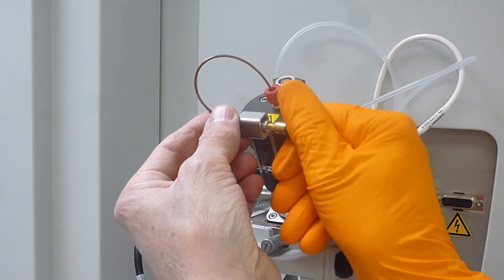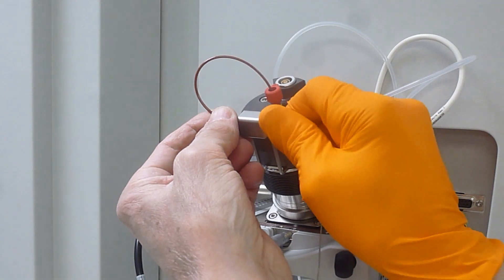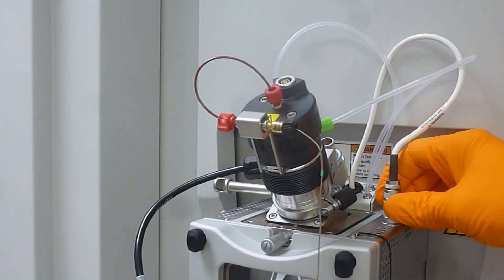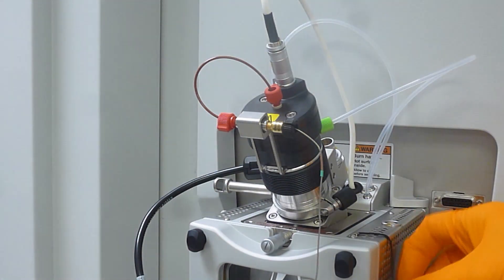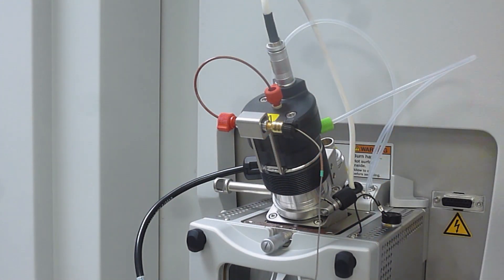Then fit the LC connection, the Viper connection. Now take the HV cable and insert it in the top of the probe and put the little cap back in to keep the socket clean.